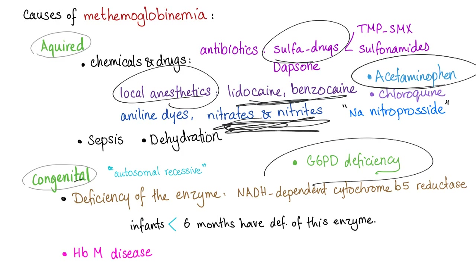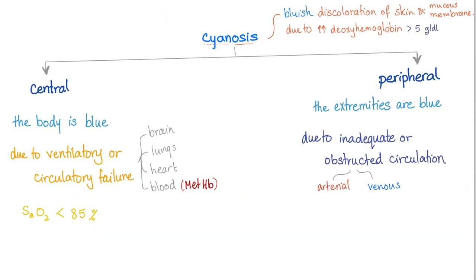Congenital: G6PD deficiency and deficiency of the amazing enzyme NADPH-dependent cytochrome B5 methemoglobin reductase. In medicine, there are two types of cyanosis: central cyanosis and peripheral cyanosis. What is cyanosis? It's bluish discoloration of the skin and mucous membrane.